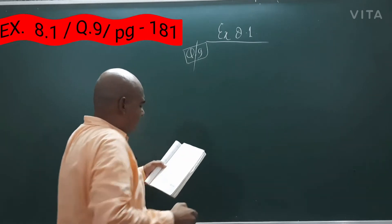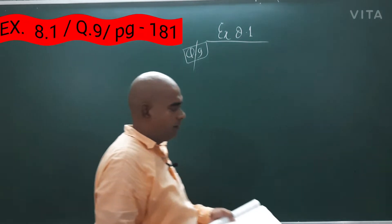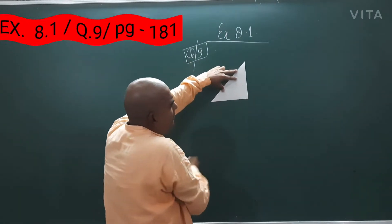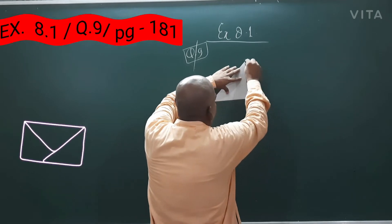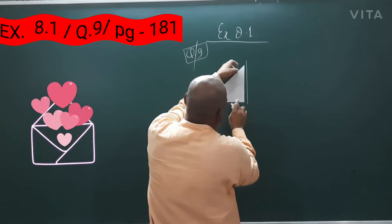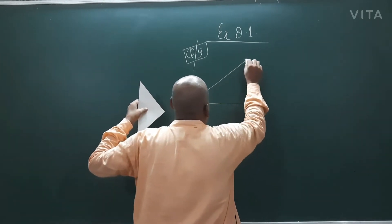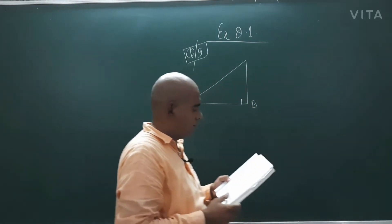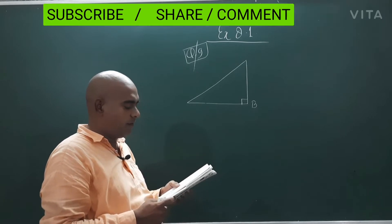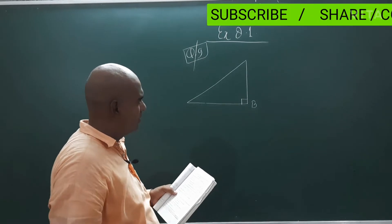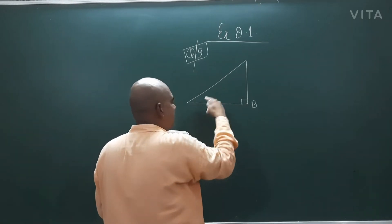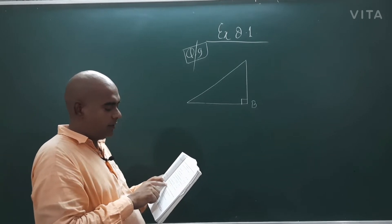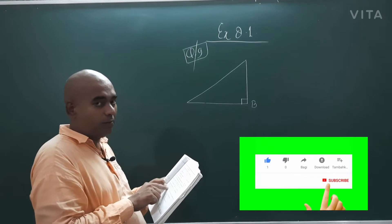The question is very good. In triangle ABC, right angle at B — so this is B, right angle at B. If tan A is equal to 1 upon root 3, find the value of sin A cos C plus cos A sin C. You are not talking about B because it is 90 degrees.